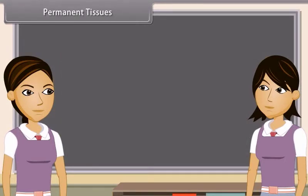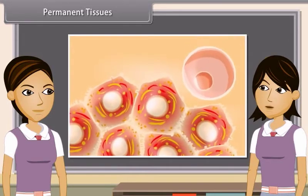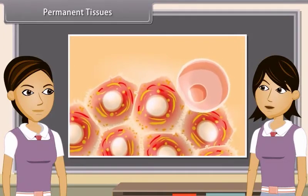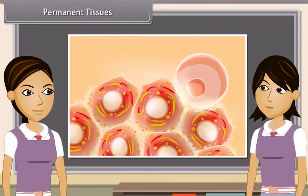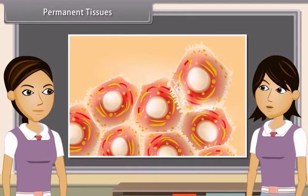After some duration, meristematic tissues lose their ability to divide and take up a specific role and form a permanent tissue. This process is called differentiation. Differentiated meristematic tissues form different types of permanent tissues.